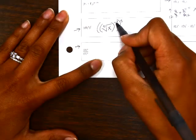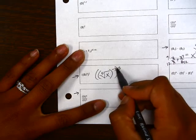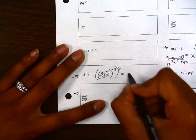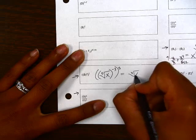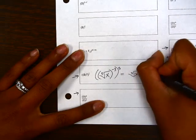Here we have a radical to an exponent to another exponent. We know that if we have a power to another power, like right here, we can multiply those together. So this will become 5th root of x and my new exponent after multiplying these is negative 15.